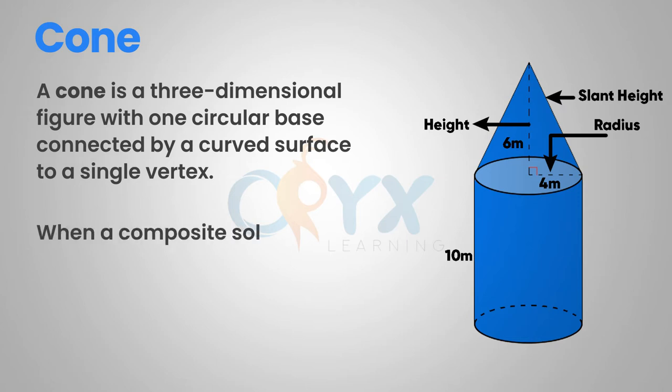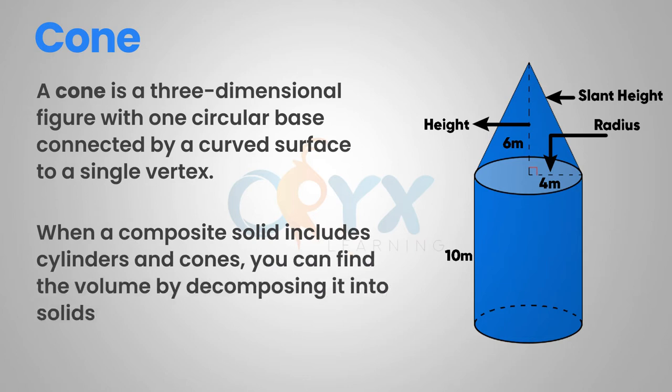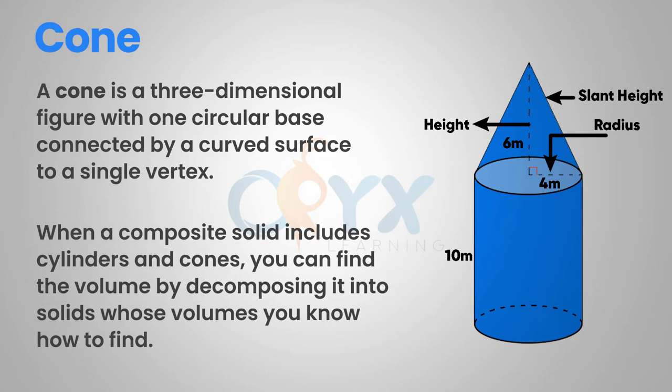When a composite solid includes cylinders and cones, you can find the volume by decomposing it into solids whose volume you know how to find. So if you were to get a composite like the one shown, you would break it up into a cylinder and find the volume of the cylinder, and a cone and find the volume of a cone, and then add their two volumes together.